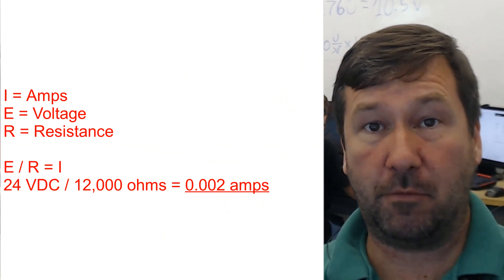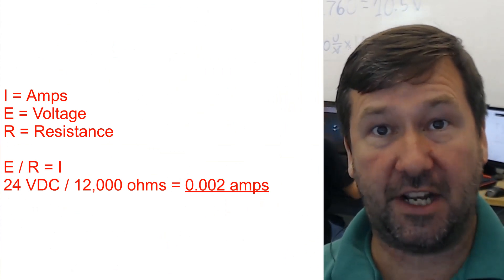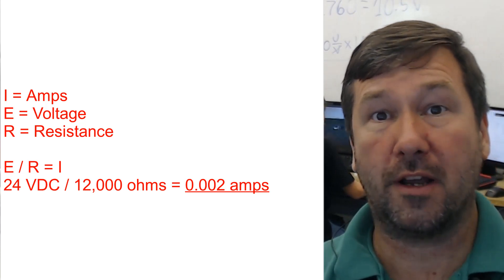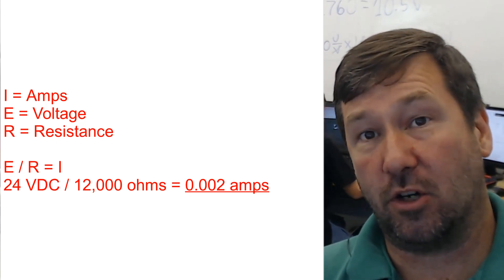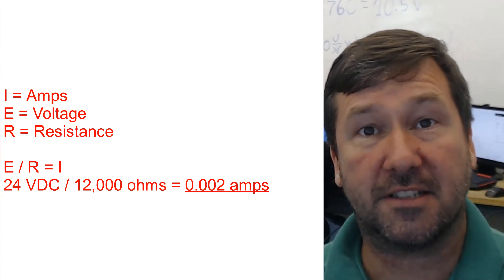So if we plug our numbers in, we have 24 volt DC and we have 12,000 ohms. So 24 divided by 12,000 is going to be 0.002 or two thousandths of an amp.